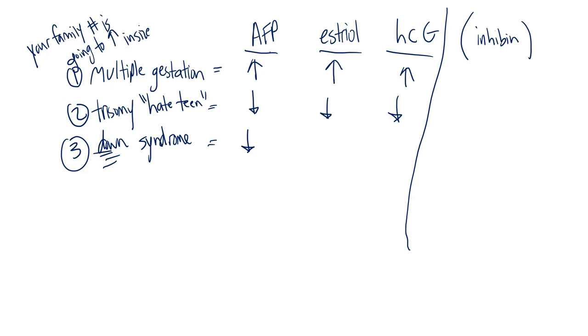But it doesn't stop there. Not only is AFP down, but estriol is also down, and hCG is increased. It's a good start to know that in Down syndrome AFP is decreased, but also estriol is decreased and hCG is increased. Inhibin is also increased in Down syndrome.